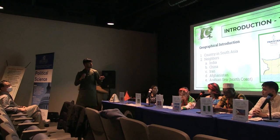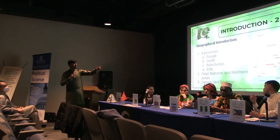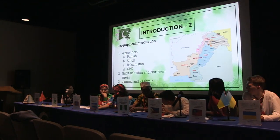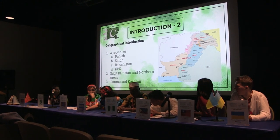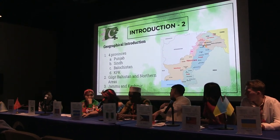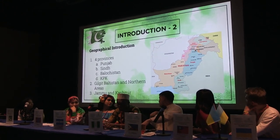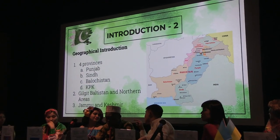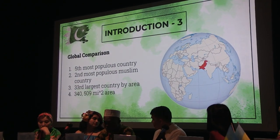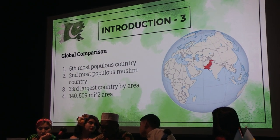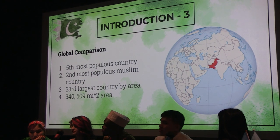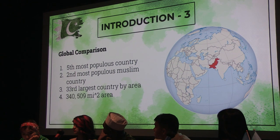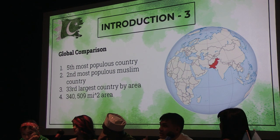Talking about a geographical introduction: Pakistan has four main provinces — Punjab, Sindh, Balochistan, and Khyber Pakhtunkhwa. It also has some associated northern areas that are autonomous territories with their own rules and regulations, and one disputed area, Jammu and Kashmir. Comparing Pakistan globally, it is the fifth most populous country, the second most populous Muslim country, and the 33rd largest country by area, with an area of 340,509 square miles.